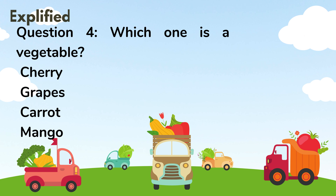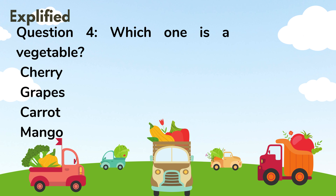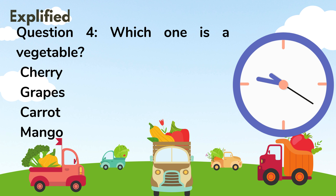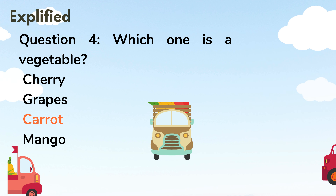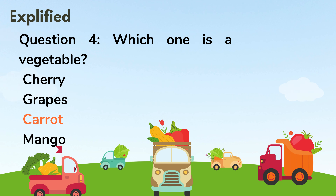Question 4: Which one is a vegetable? Cherry, Grapes, Carrot, Mango. Answer: Carrot.